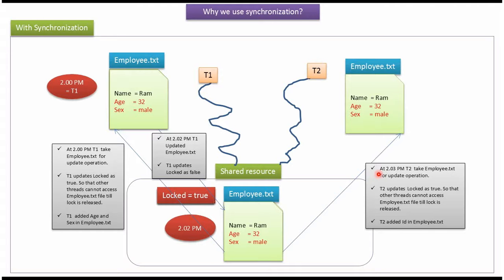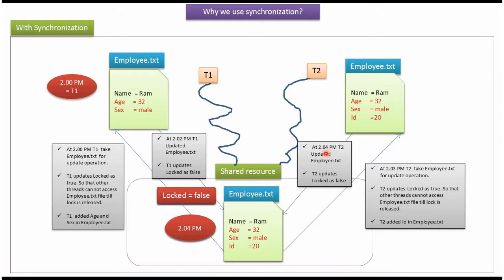At 2.03 pm, thread2 takes the employee.txt file for update operation. Thread2 also updates locked equal to true, so that other threads cannot access employee.txt till the lock is released. Thread2 added id equal to 20 in employee.txt. At 2.04 pm, thread2 updated the employee.txt file. Employee.txt now contains name equal to rom, age equal to 32, sex equal to male, and id equal to 20. Thread2 then updates locked equal to false.